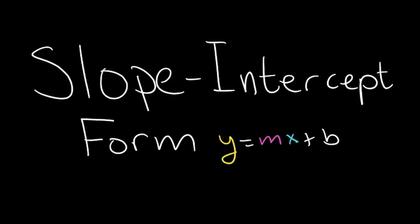Slope intercept form is the most common form of a linear equation. It is written as y equals m times x plus b. m, we already learned in the last video, that is our slope, and b is our y-intercept.